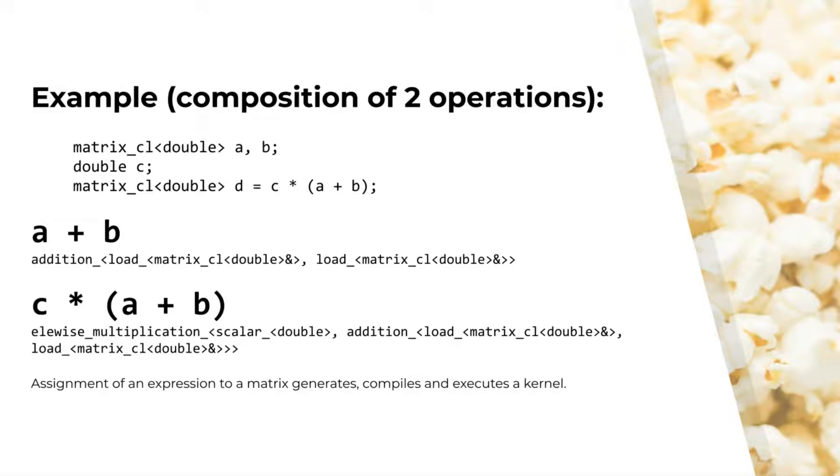Once the element-wise multiplication object is assigned to the resulting matrix, the kernel that combines these two operations is generated. Each operation object generates code for one operation, which is then combined into the kernel. The kernel is then compiled and executed.